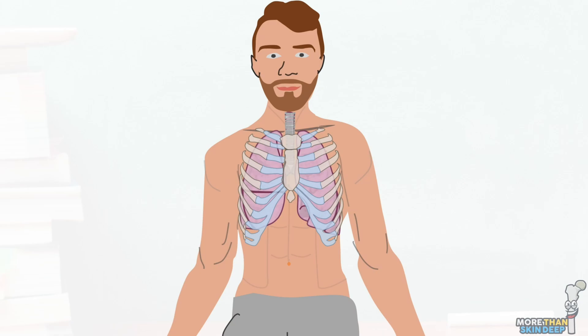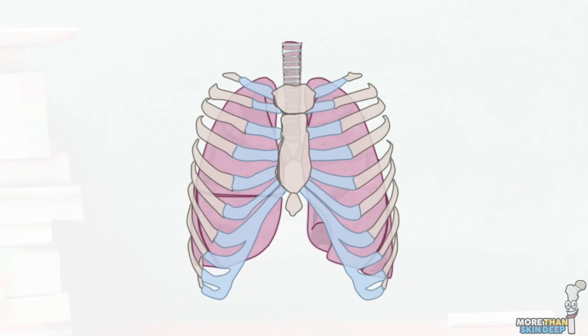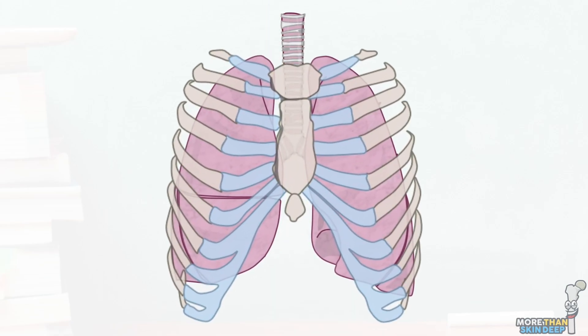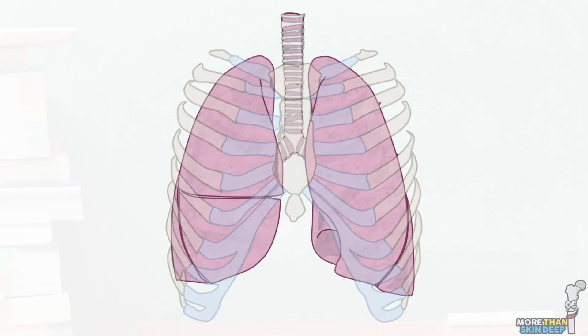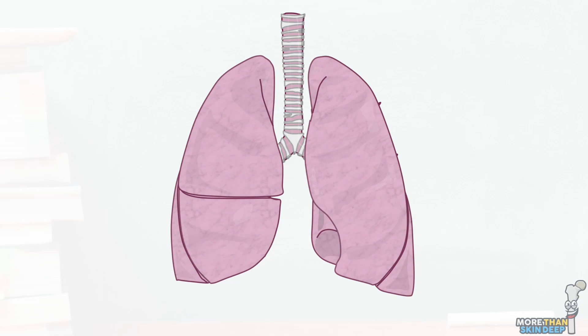The gateway into the lung through which most important structures enter and exit is known as the hilum. The lung hilum lies medially on the lung's mediastinal surface. There is one hilum per lung and they lie around the T5 to T7 vertebral levels.